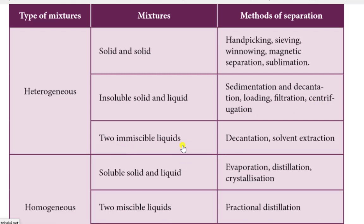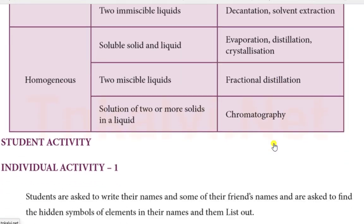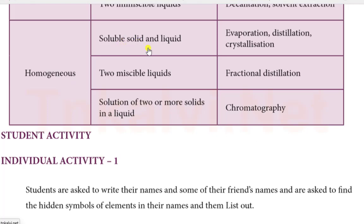Two immiscible liquids - decantation and solvent extraction. Immiscible liquids don't mix. For example, oil and water. The next type of mixture is homogeneous mixture - soluble solid and liquid. By evaporation, distillation, and crystallization.